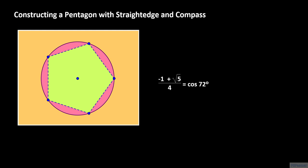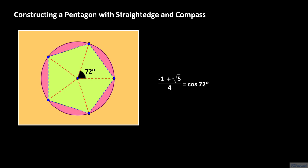Precisely how is 72 degrees related to the regular pentagon? We all know that a full revolution around any point, such as the center of a pentagon, measures 360 degrees. Subdividing 360 degrees into 5 equal central angles, each central angle will measure 72 degrees. Furthermore, if the pentagon is inscribed within the unit circle, and one of the vertices lies on the positive x-axis, then another vertex will have coordinates cosine 72 degrees and sine 72 degrees.